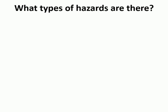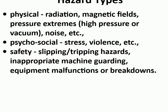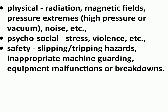What types of hazards are there? A common way to classify hazards is by category: biological — bacteria, viruses, insects, plants, birds, animals, and humans, etc. Chemical — depends on the physical, chemical, and toxic properties of the chemical. Ergonomic — repetitive movements, improper setup of workstation, etc. Physical — radiation, magnetic fields, pressure extremes, high pressure or vacuum, noise, etc. Psychosocial — stress, violence, etc. Safety — slipping and tripping hazards, inappropriate machine guarding, equipment malfunctions or breakdowns.